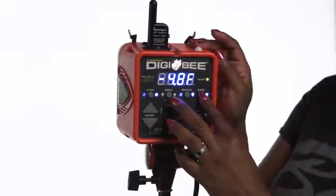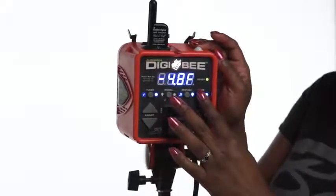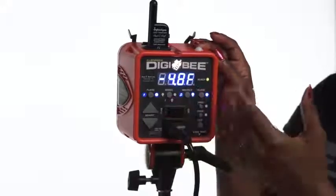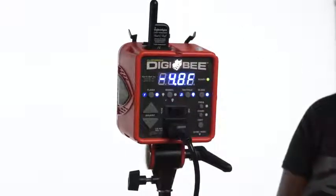The slave cell in the Digibee can be toggled on and off by pushing the slave button. When the blue LED to the right of the slave button glows blue, that means the slave cell is turned on, which means the Digibee will respond to any flash of light from any other light source. So if you have other lights in your setup, you can use those to optically trip the Digibee without the use of cords or wires.